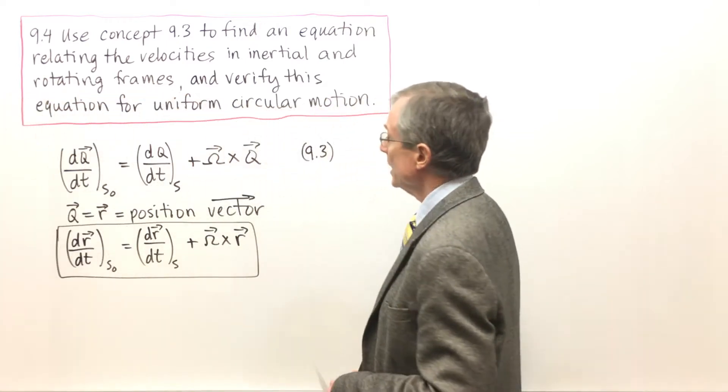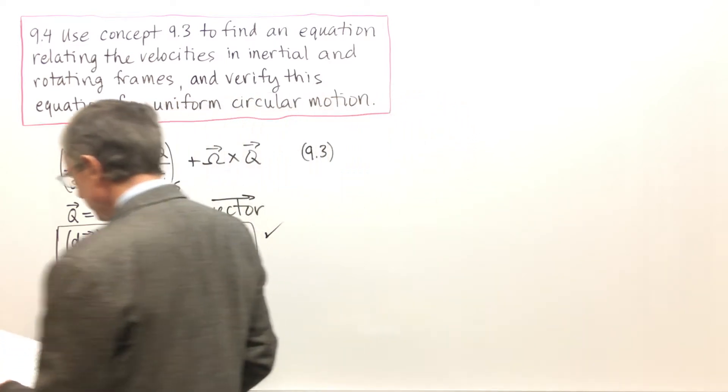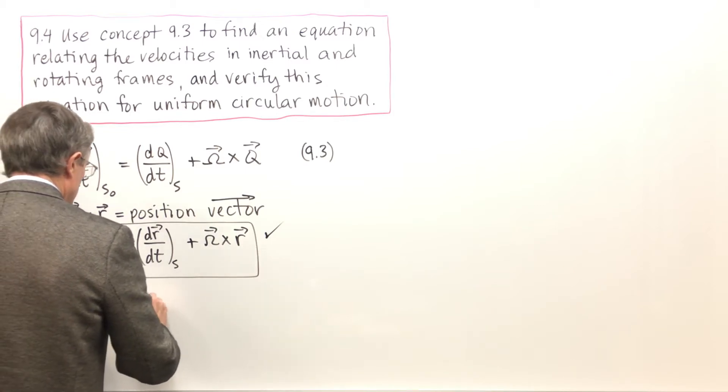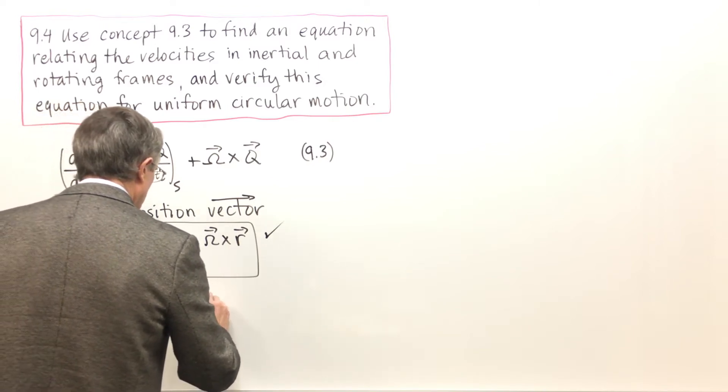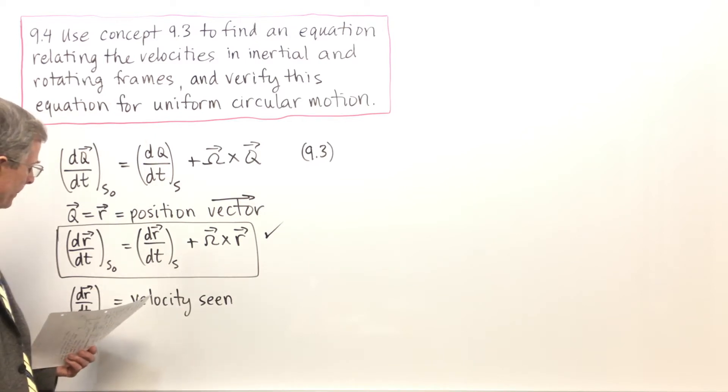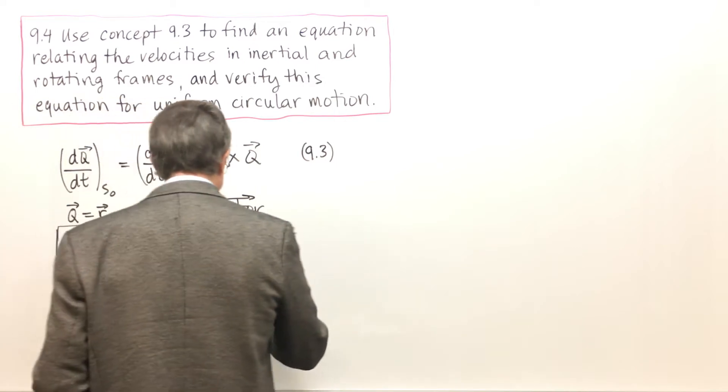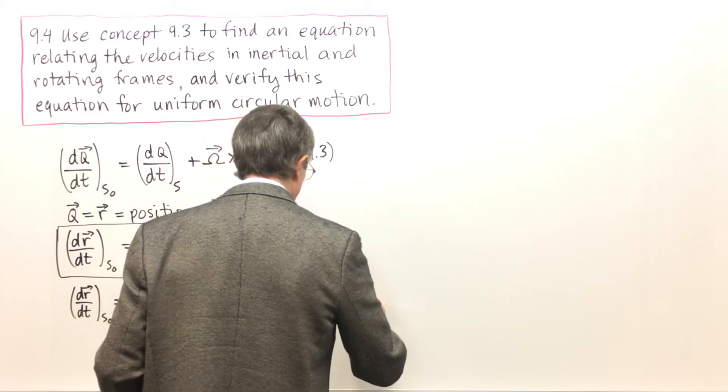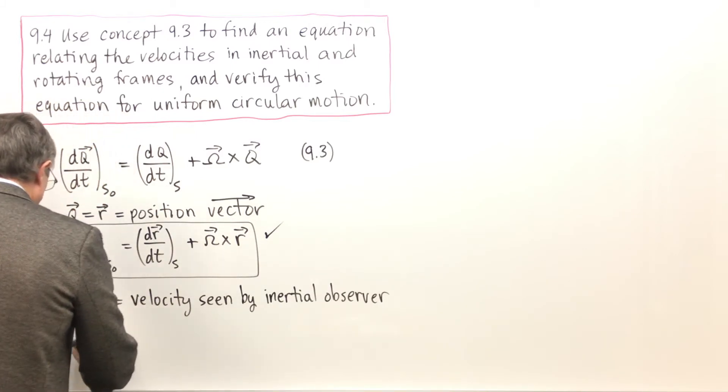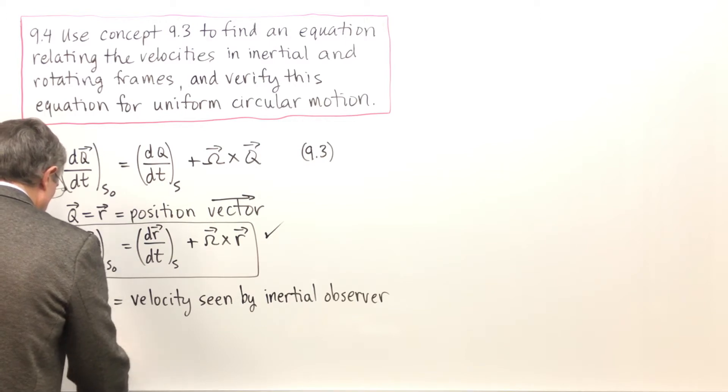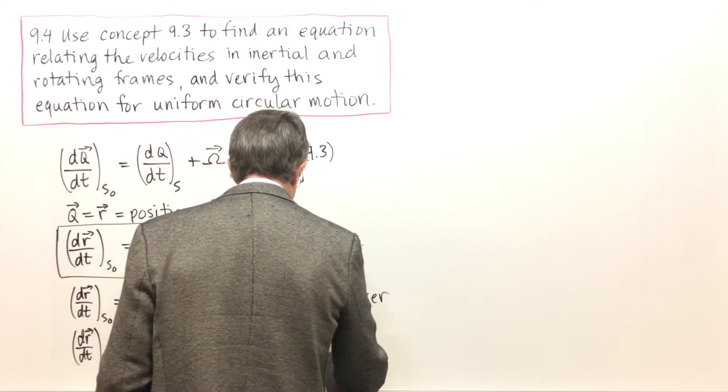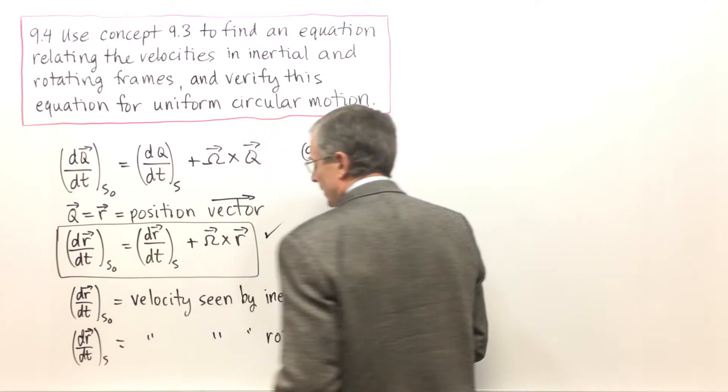So putting Q equals R, that is the desired relationship between the velocities. Now let's be clear about what we mean. dR/dt S naught is a velocity seen by an inertial observer, and dR/dt S is the velocity seen by the rotating observer.